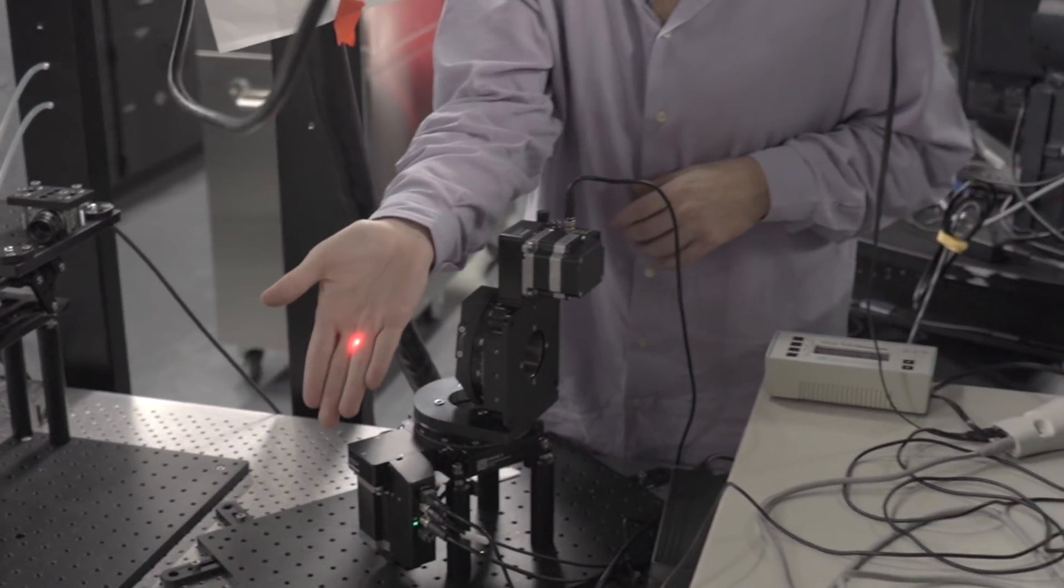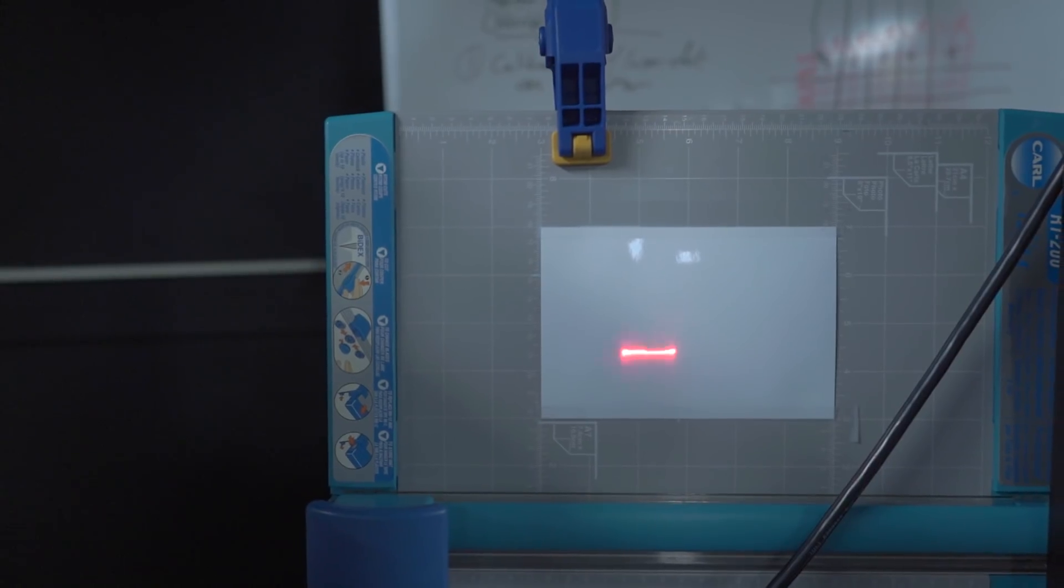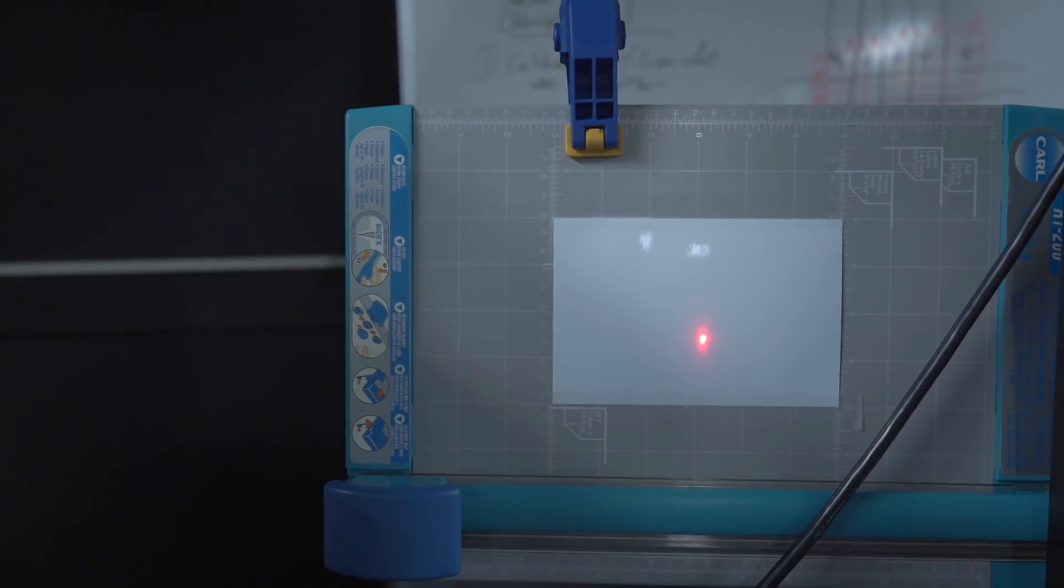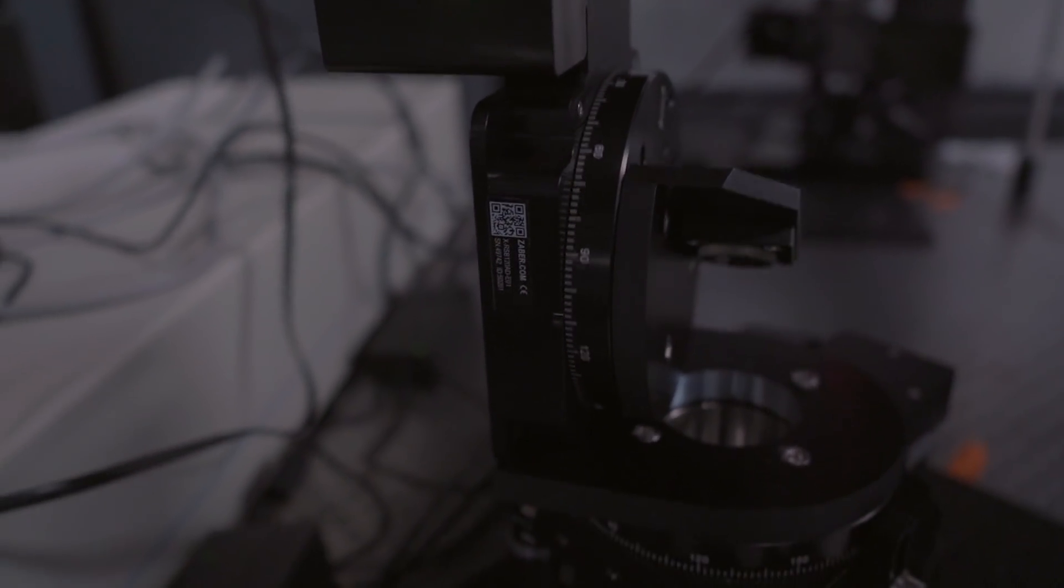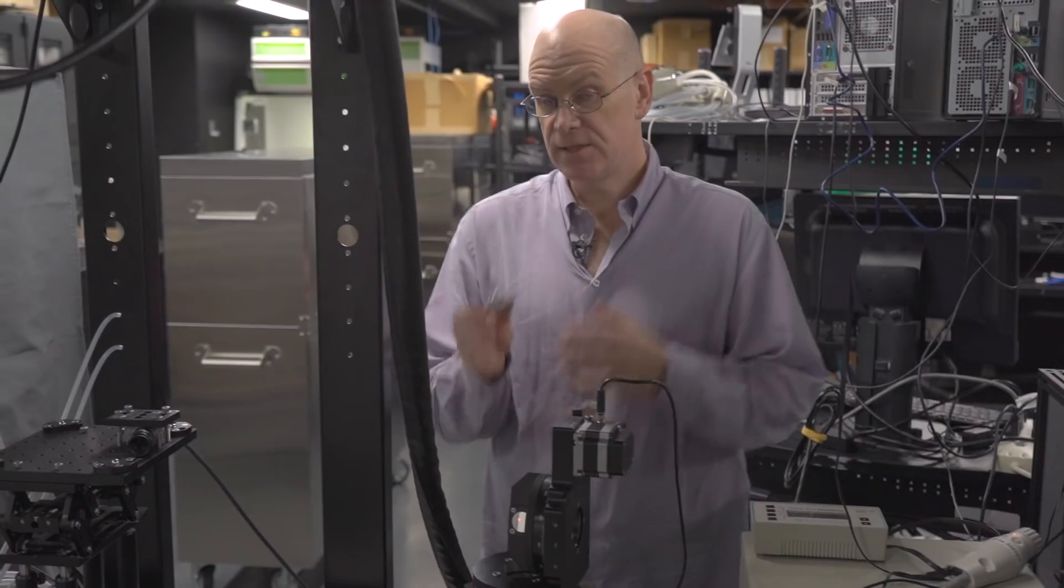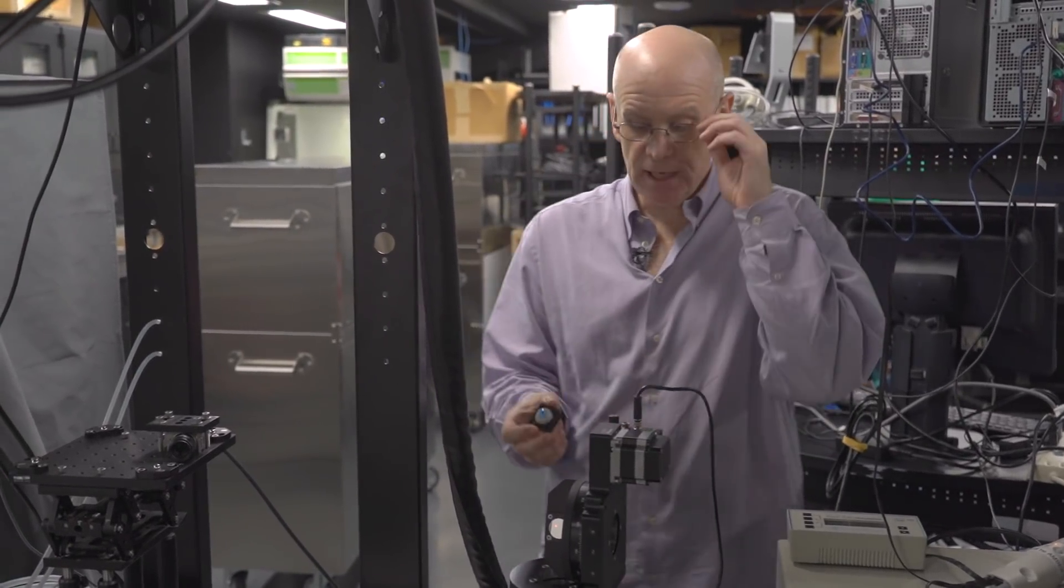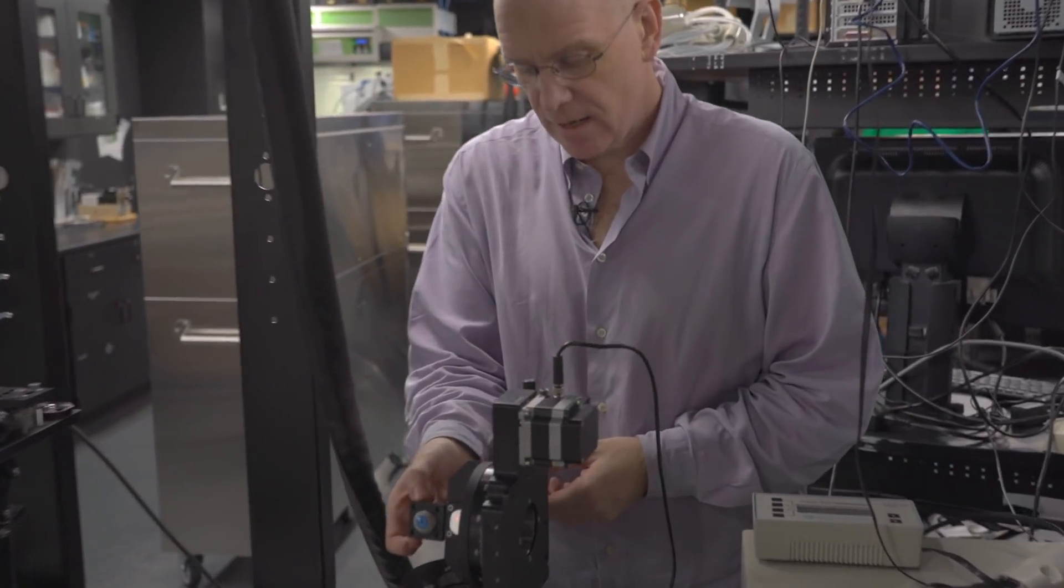Once we have actually calibrated the system and we know exactly how it moves, and that we can make motions that are smaller than what a human eye could actually do, we're now ready to calibrate modern eye trackers against the system. So we take the mirror off and we put now a human glass eye on there.